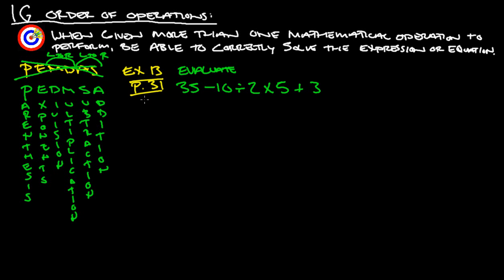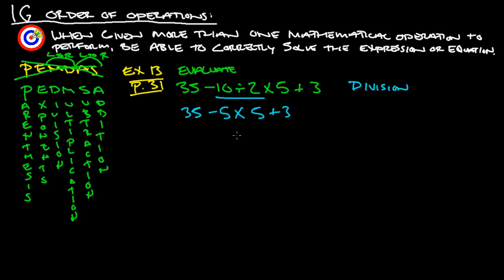According to PEDMSA, there are no parentheses and no exponents, so the first thing we do is division. We take negative 10 divided by 2, which is negative 5. So we have 35 minus 5 times 5 plus 3. Next we do multiplication: 5 times 5 is 25, giving us 35 minus 25 plus 3.